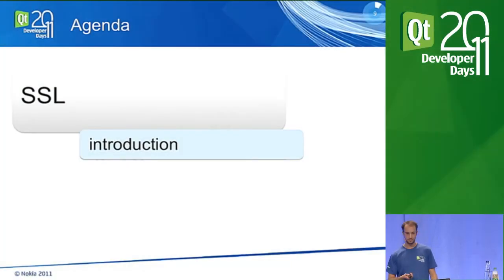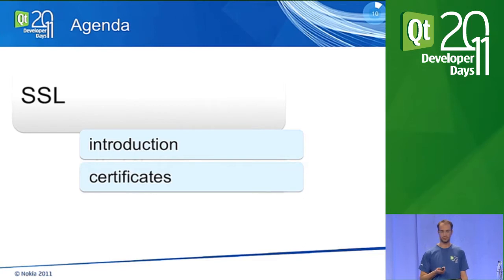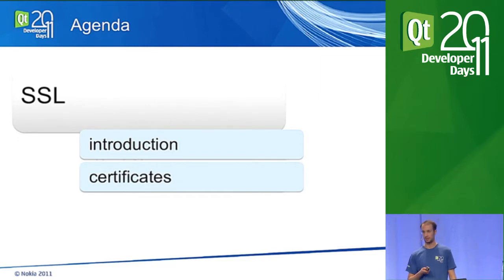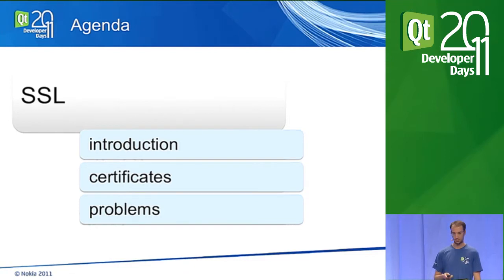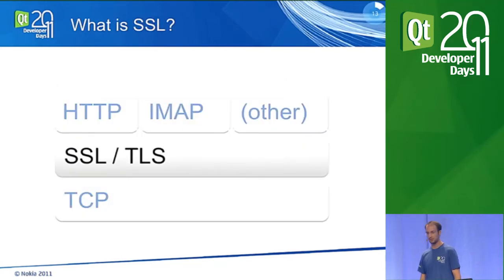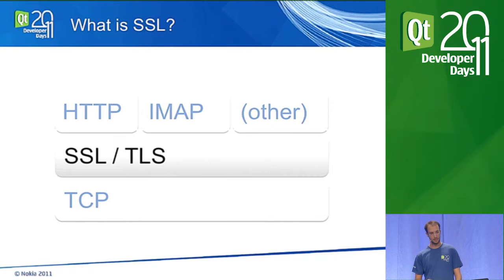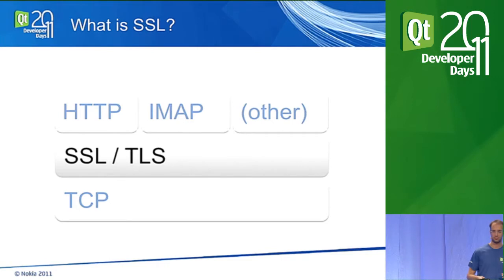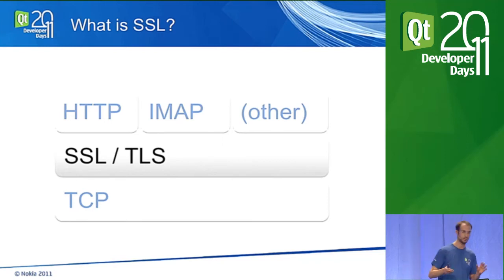Let's start with SSL. What is SSL? As you can see, SSL sits between TCP and application layer protocols. SSL stands for Secure Socket Layer, and you might have heard of TLS, which is actually a newer version of the SSL protocol. I'll use the SSL term overall to describe both SSL versions and TLS.